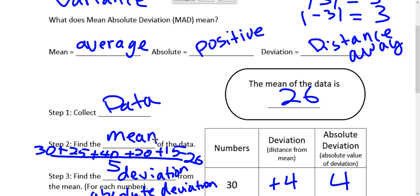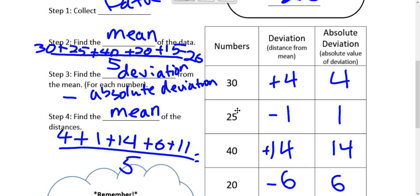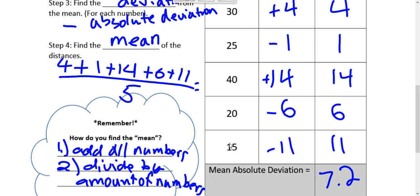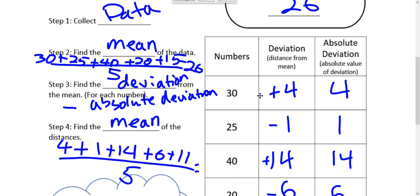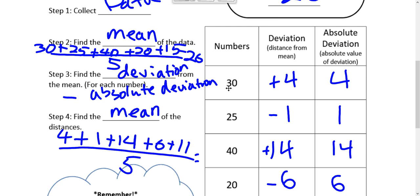And then you find the mean of the data, meaning you add up all the numbers. So in our data table, we're going to add up 30, 25, 40, 20, and 15. And then we're going to divide it by 5, because there's 5 numbers. And then we get 26 is our mean. So the mean of this data is 26.